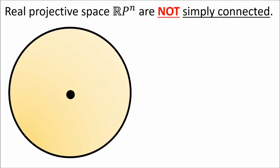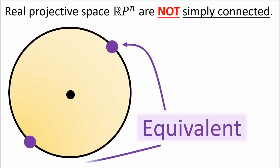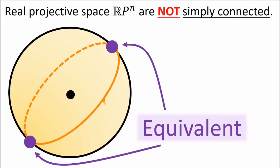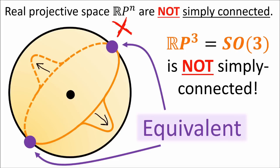The same is true for the 3-sphere and all higher dimensional spheres. The exception is the 1-sphere, or circle, which is not simply connected. Since the 3-sphere is simply connected, this means that the space of SU2 matrices, or unit quaternions, is also simply connected. Real projective spaces are not simply connected. For example, the real projective plane RP2 is a sphere with opposite points made equivalent. If we have a loop and try to contract it, the opposite end of the loop will run away in the opposite direction, because opposite points on the sphere are equivalent. Therefore, loops like this cannot be continuously shrunk to a point. The same is true for real projective space RP3, which is the space of SO3 matrices. So the space of SO3 matrices is not simply connected.